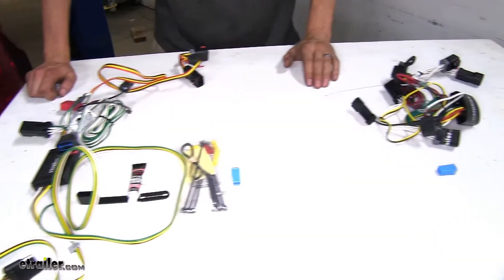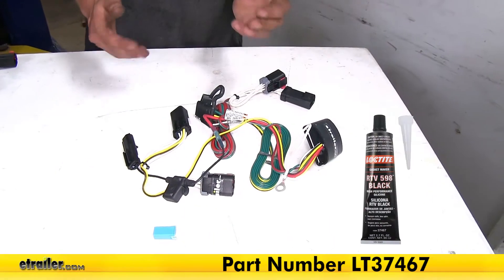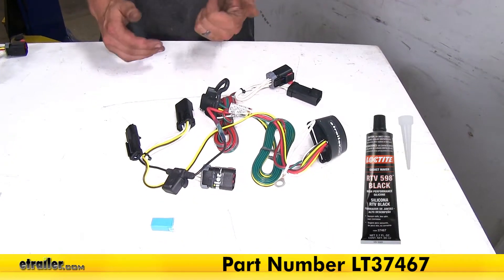Our Takansha wiring harness, however, doesn't come with that, but we do have silicone sealant available on our website if you need to pick some up.